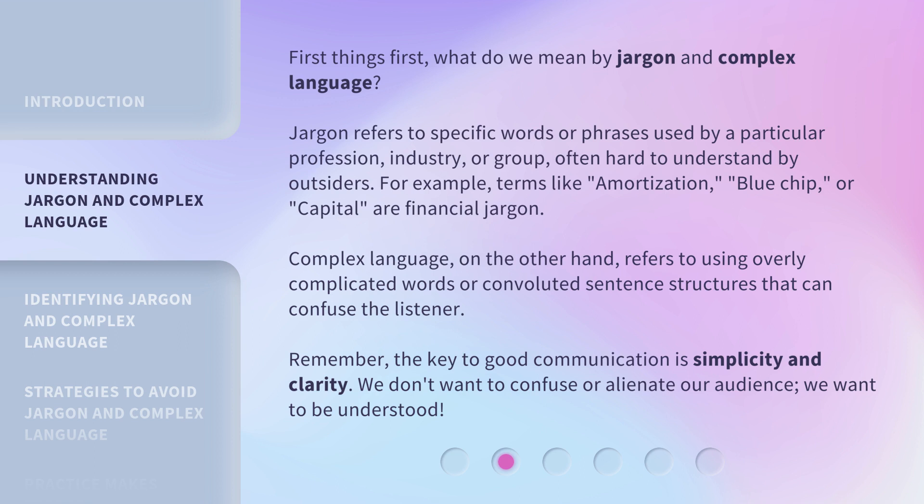First things first, what do we mean by jargon and complex language? Jargon refers to specific words or phrases used by a particular profession, industry, or group, often hard to understand by outsiders. For example, terms like amortization, blue chip, or capital are financial jargon. Complex language, on the other hand, refers to using overly complicated words or convoluted sentence structures that can confuse the listener. Remember, the key to good communication is simplicity and clarity. We don't want to confuse or alienate our audience — we want to be understood.